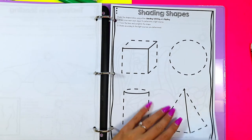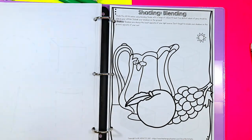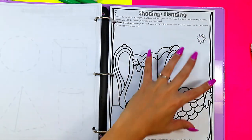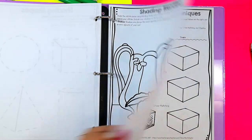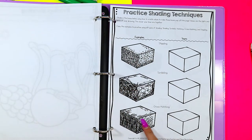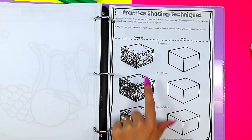They can shade in shapes, shading and blending, creating shadows on a still life. They will be practicing their shading techniques on cubes using stippling,